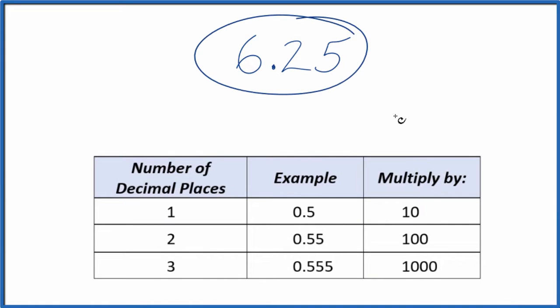Let's write the number 6.25 as a fraction. So first off, what we'll do, we'll call it 6.25 over 1. It's still 6.25, but now we have the start of a fraction.